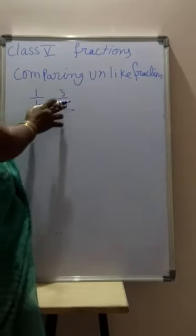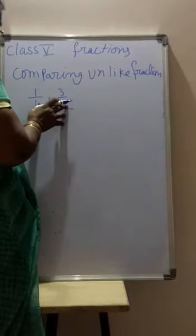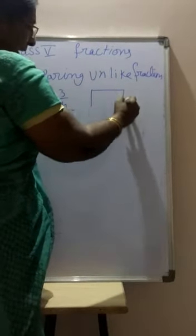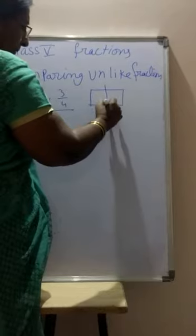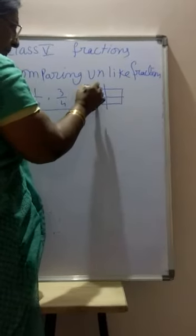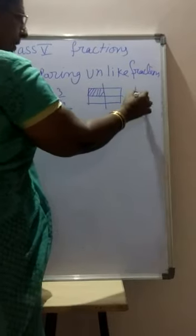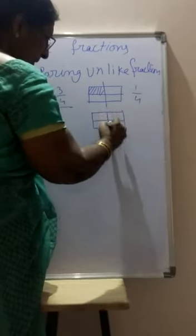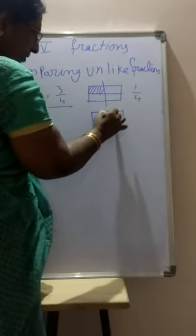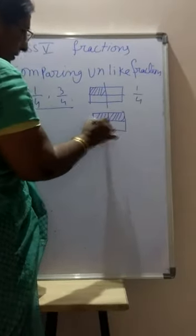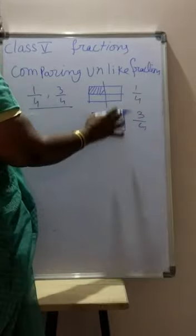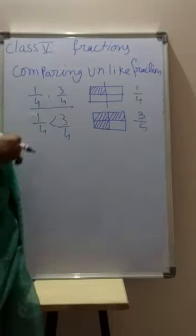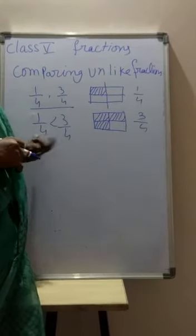It is very easy to compare when the two denominators are equal — both are 4. How do you say which is greater, which is smaller? The first fraction is 1 by 4. The second fraction is 3 by 4. Which is greater? It is very easy to tell — 3 by 4 is greater than 1 by 4.